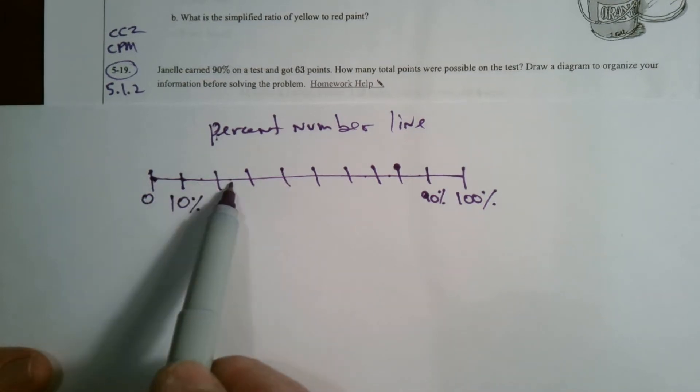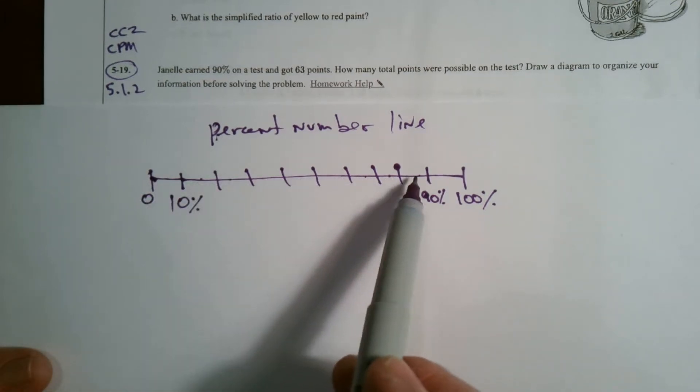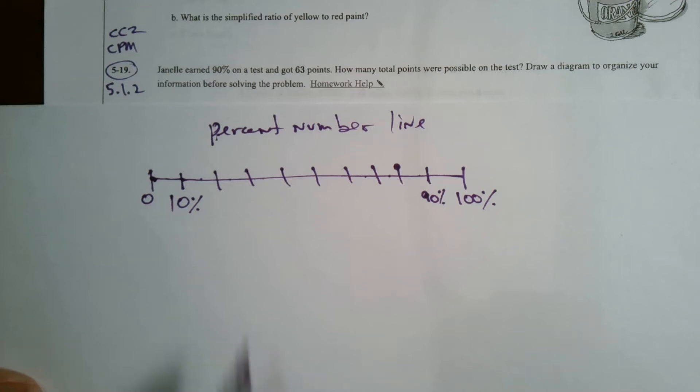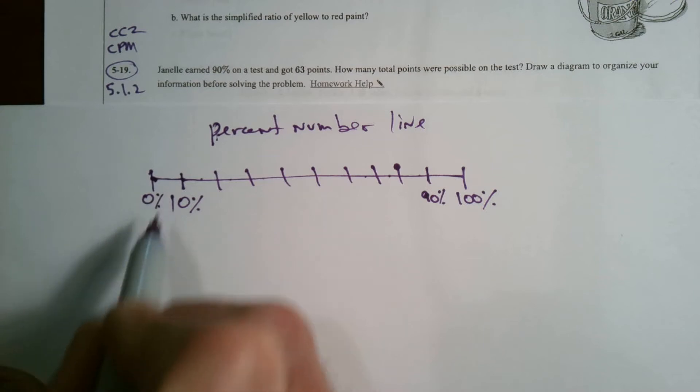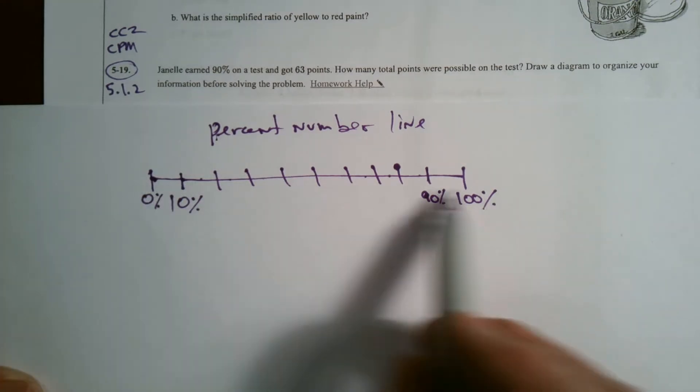All right. So now let's just check 1, 2, 3, 4, 5, 6, 7, 8, 9, 10. Yes. All right. So now I've got my number line broken up from 0 to 100 in 10 spots.